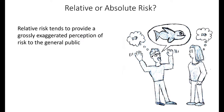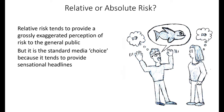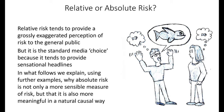So relative risk tends to provide a grossly exaggerated perception of risk to the general public. It frames the risk in a particular way which creates that deception. It's a standard media choice because it tends to provide more sensational headlines. In what follows, I'm going to explain using further examples why absolute risk is not only a more sensible measure of risk, but also more meaningful in a natural causal way.